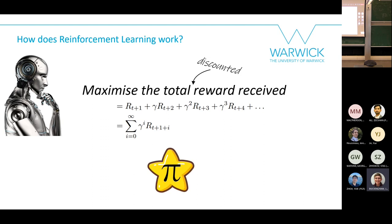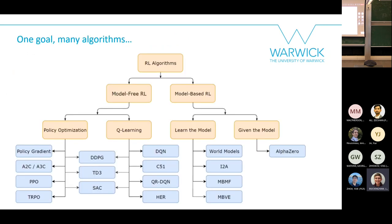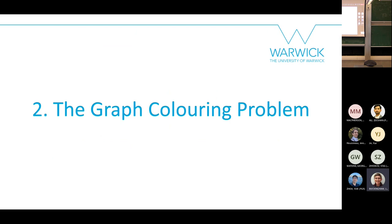To maximize reward, you learn a policy — a way of deciding, given a state, what action to take. There are many reinforcement learning algorithms. The one I've been using is DQN, which is fairly simple and was used in the AlphaGo paper. Now let's move on to the graph coloring problem.